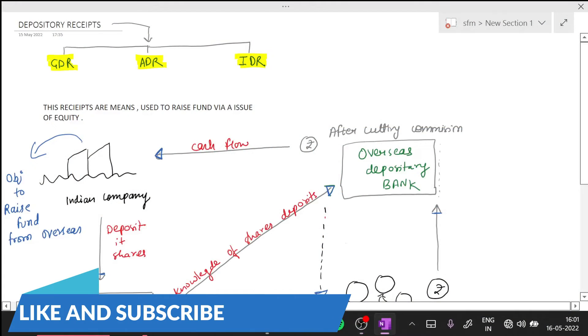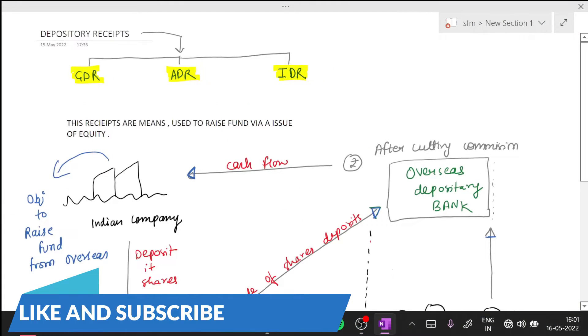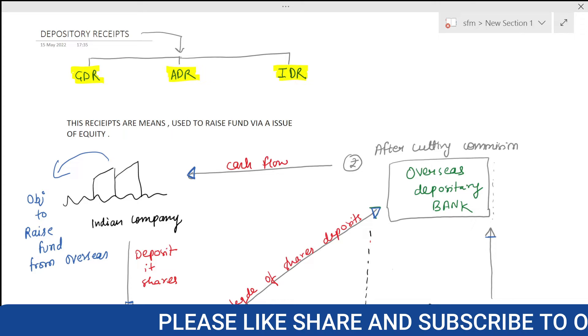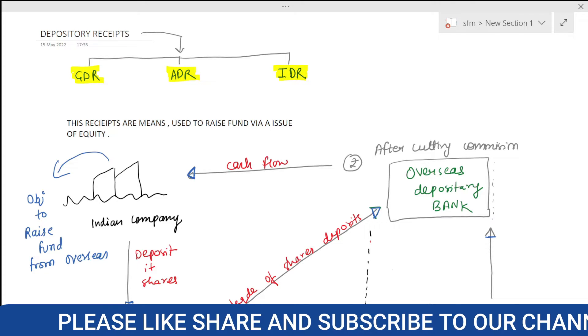Hey guys, welcome! Today's topic is depository receipts. What do you mean by depository receipts? These receipts are the means by which we can raise funds via issue of equities. There are three modes of issuing: